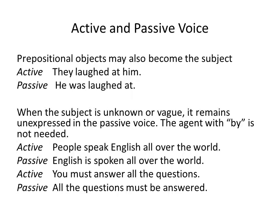Prepositional objects may also become the subject. For example — Active: 'They laughed at him.' Passive: 'He was laughed at.' When the subject is unknown or vague, it remains unexpressed in the passive voice — the agent with 'by' is not needed. For example — Active: 'People speak English all over the world.' Passive: 'English is spoken all over the world.' Active: 'You must answer all questions.' Passive: 'All questions must be answered.'